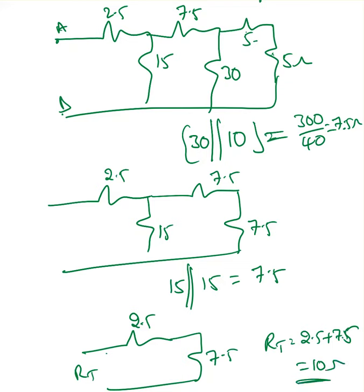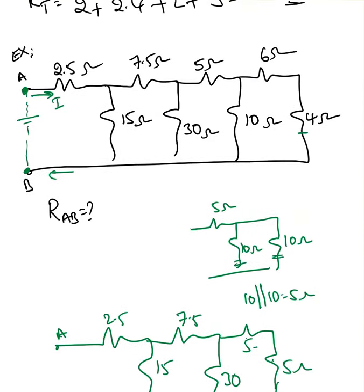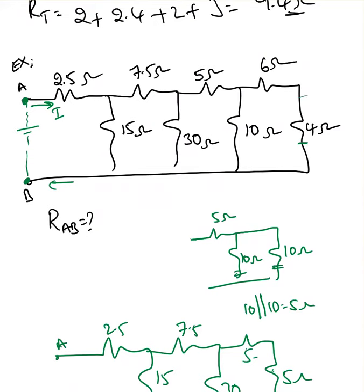Whenever you see a ladder circuit, it's really easy — I finished it within one minute. Whenever you see a ladder circuit, always start from the resistor which is farthest away, then minimize the branches of the ladder, and you will end up finding the resistance between the A-B terminals. I'll stop this video here — thank you, and I'll solve more examples in the next video.